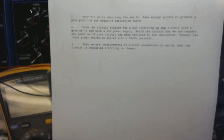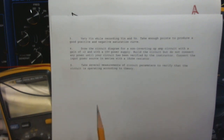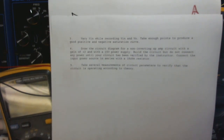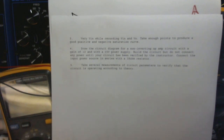Continuing on, procedure number three is to vary V_in while recording V_in and V_out, taking enough points to produce a good positive and negative saturation curve. Then procedure number four gets into the second circuit — we're asked to draw a circuit diagram for a non-inverting op-amp circuit with a gain of two. So if we put in two we'd expect four out; if we put in four we'd get eight out. If we put in eight, we're probably going to hit saturation.